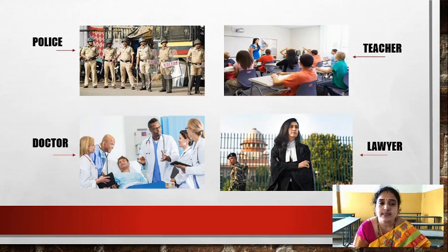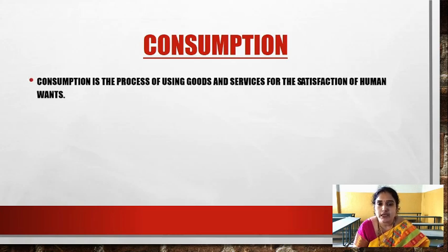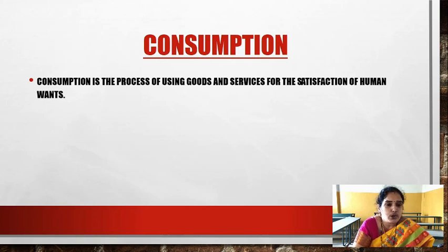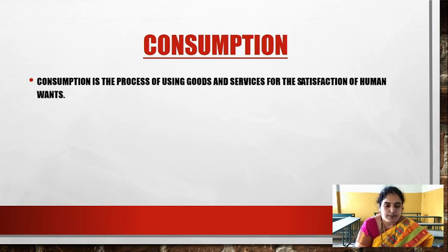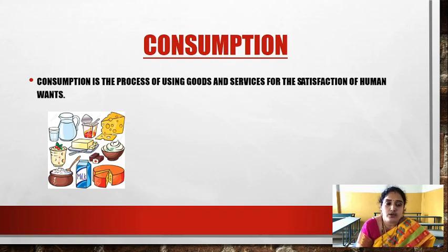Now what is consumption? Consumption is a process of using goods and services for the satisfaction of human wants. When we are purchasing goods and services for our own use — for our utility, in order to satisfy our own wants — that is called consumption. We are not purchasing goods in order to resell them; we are purchasing them in order to consume them. These are final consumption goods, such as daily products directly consumed by people. For example, if you want to eat an ice cream, we consume it directly; if we want to drink milk or eat cheese, all these goods satisfy human wants.